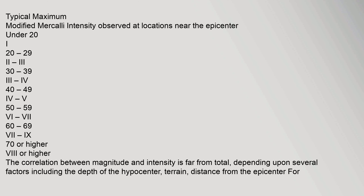Correlation with magnitude — typical maximum Modified Mercalli intensity observed at locations near the epicenter: under 2.0 → I; 2.0–2.9 → II; 3.0–3.9 → III–IV; 4.0–4.9 → IV–V; 5.0–5.9 → V–VI.